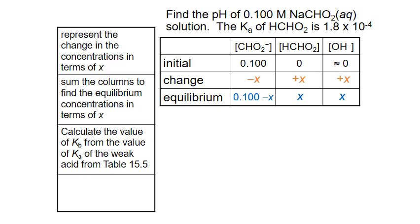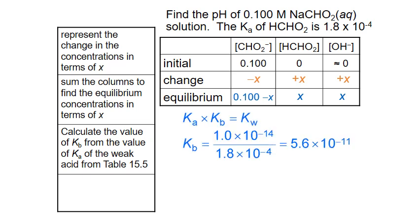We then calculate the value of Kb for our conjugate base, the formate anion. We use the reference value of Ka given for formic acid and the value of Kw, 1.0 × 10⁻¹⁴. Substituting into our equation and solving for Kb gives us 5.6 × 10⁻¹¹ for the base ionization constant of the formate anion.